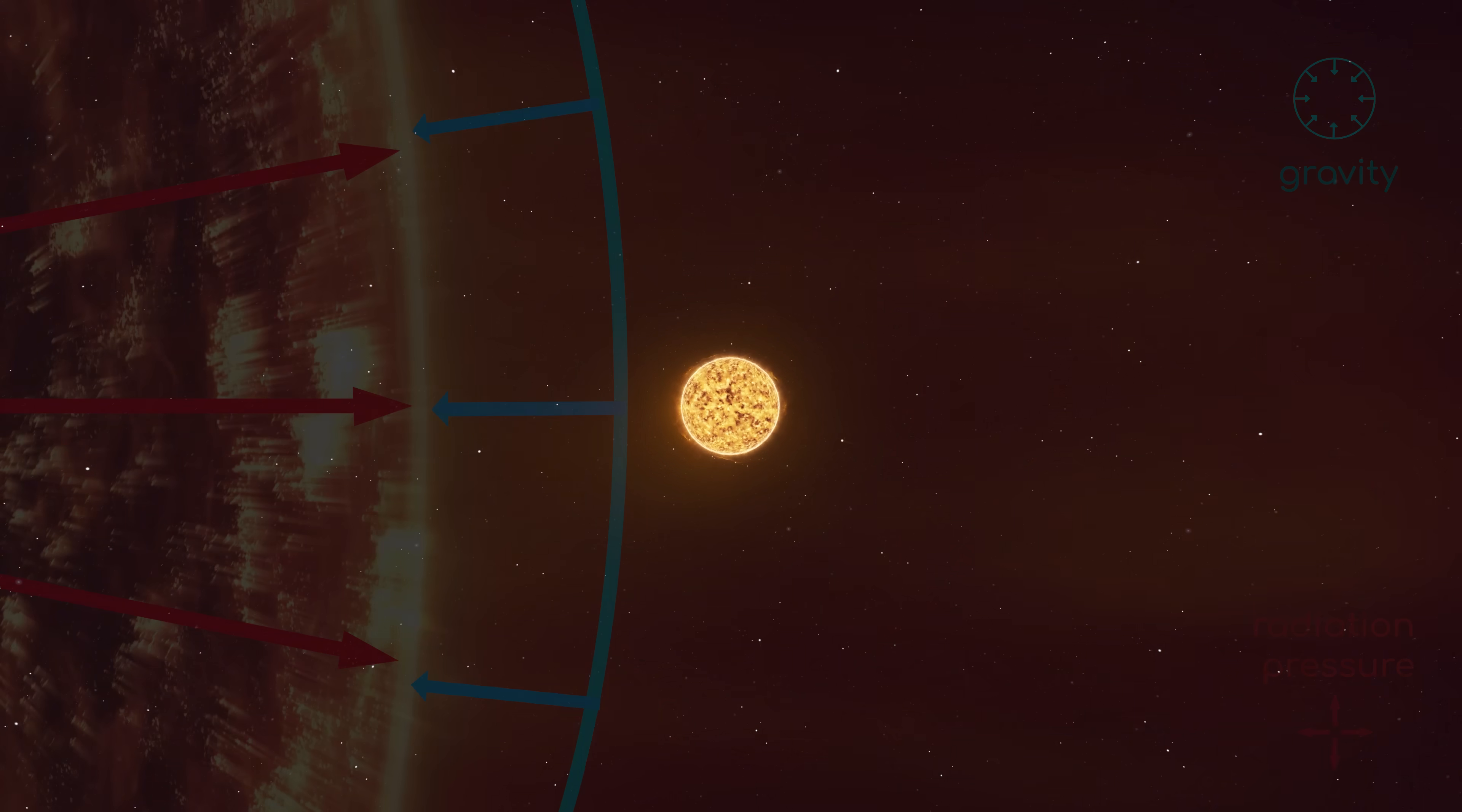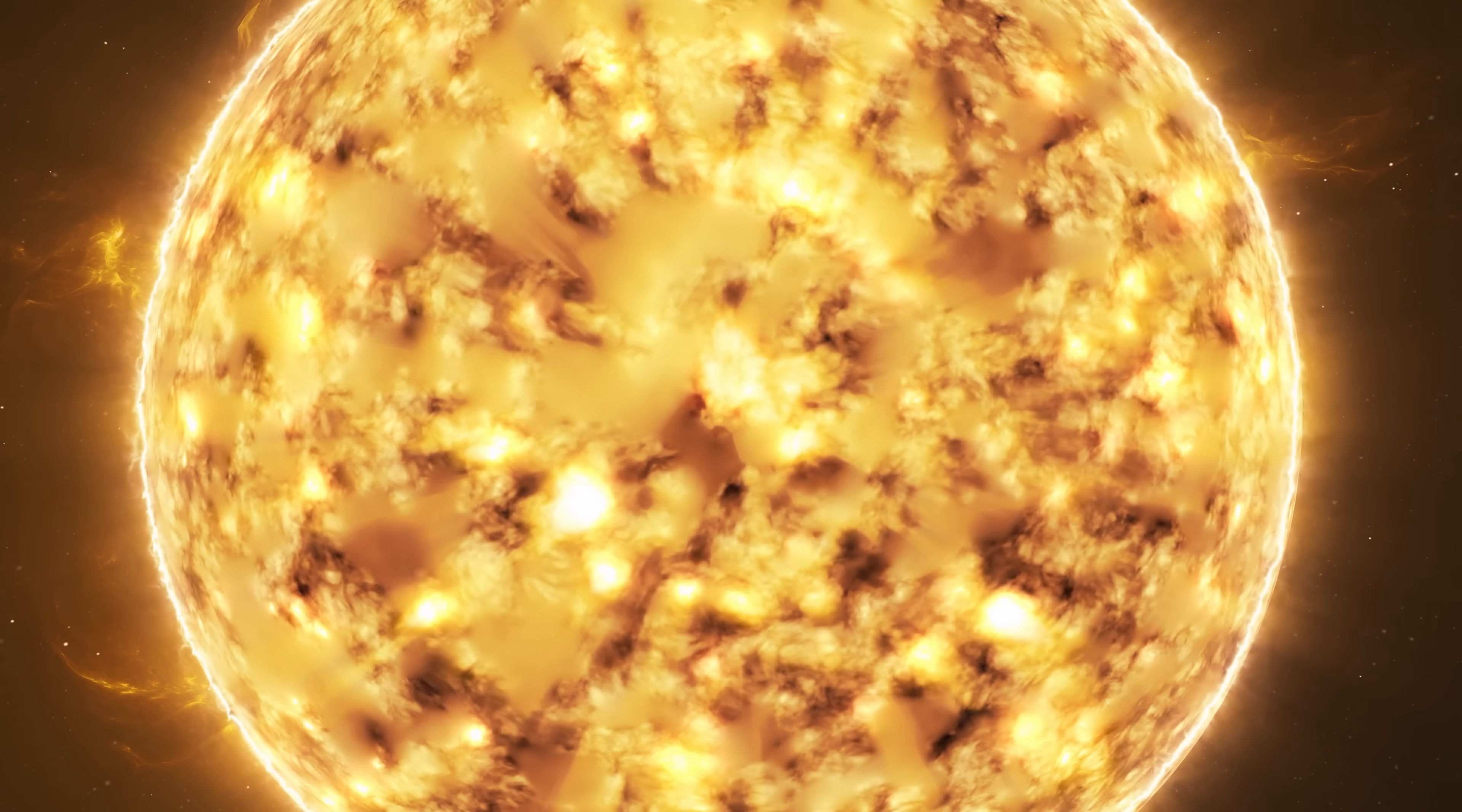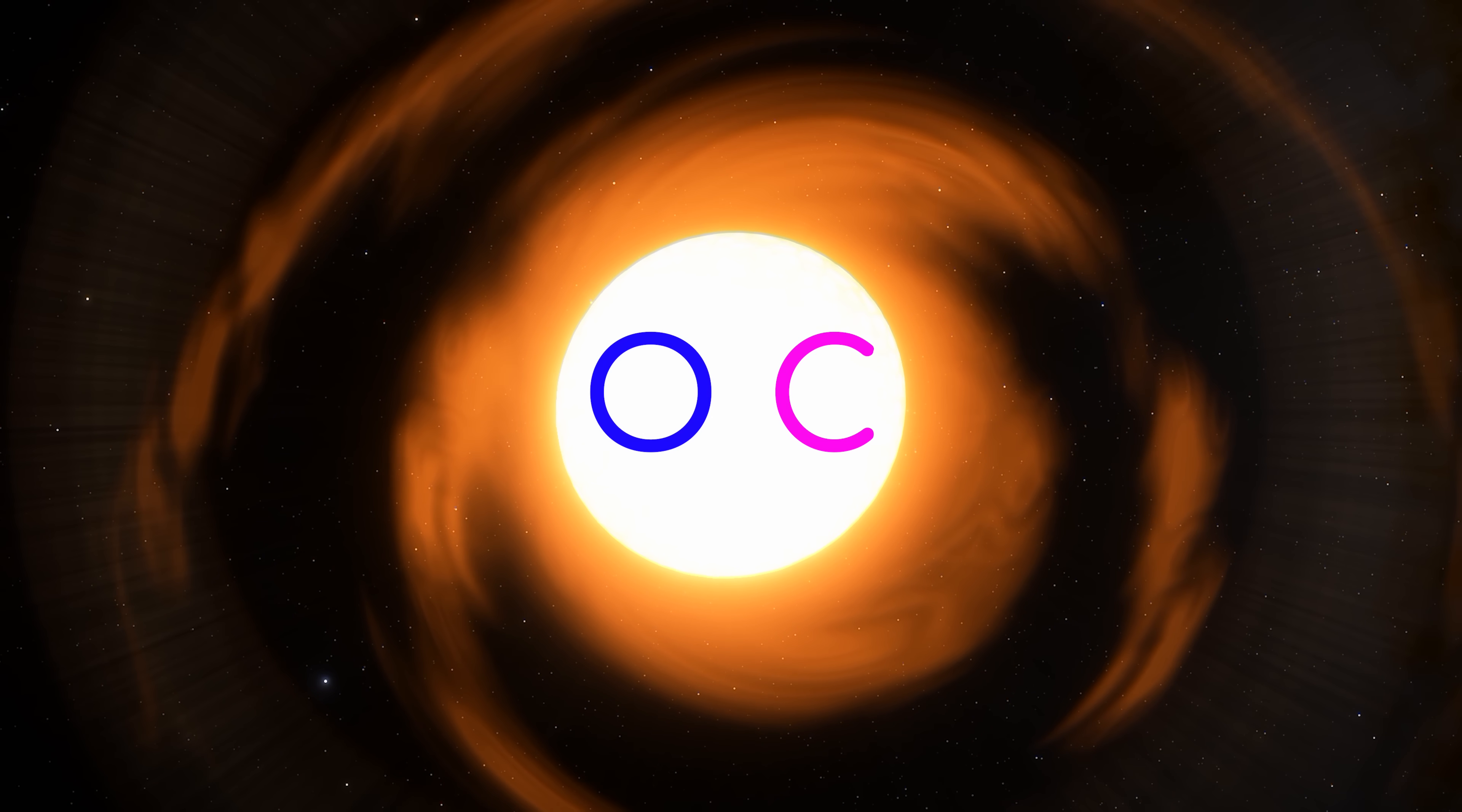This balancing act between inward pulling gravity and outward pushing pressure is a feature of pretty much all known types of stars. What differentiates different types of stars is where that pressure comes from. For our Sun, the pressure comes from fusing hydrogen into helium. When the Sun runs out of hydrogen in about 5 billion years, it will become a red giant star and begin to generate its pressure by fusing helium into even heavier nuclei like carbon and oxygen.